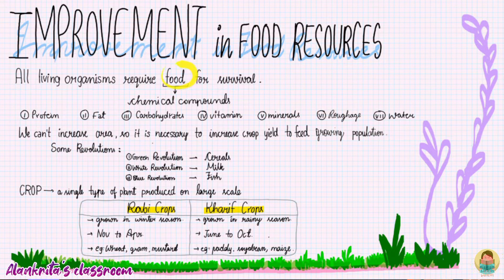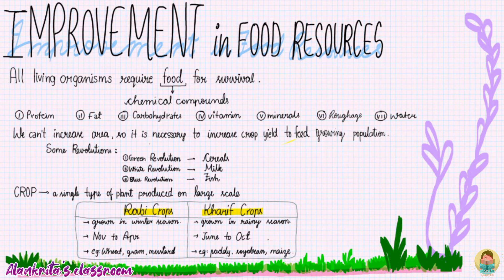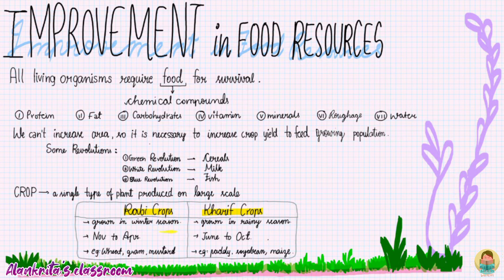As we know that all organisms require food for survival and this food contains chemical compounds. We can't increase area, so it is necessary to increase the crop yield by revolutions like green, white and blue revolutions. Crops are the single type of plant produced on a large scale and these crops are divided into rabi and kharif. The differences are given here — you can pause the video to check it.